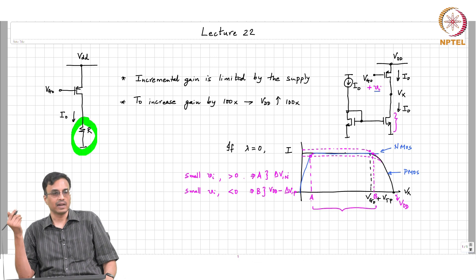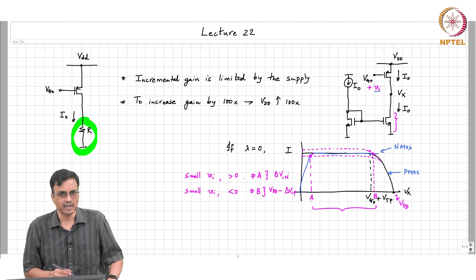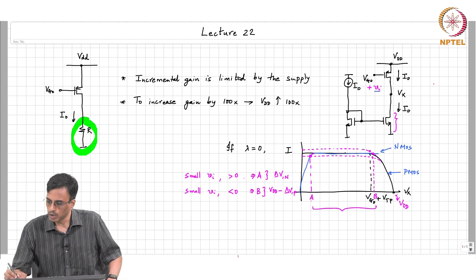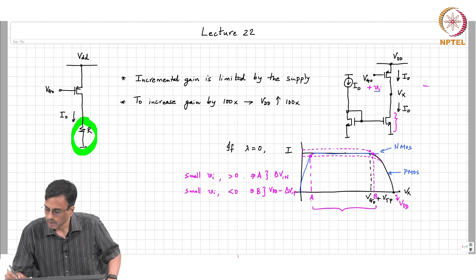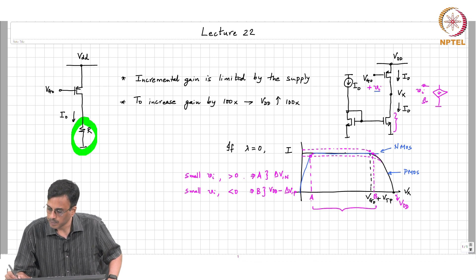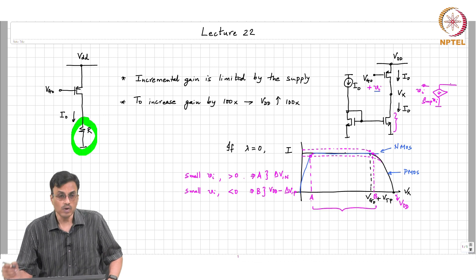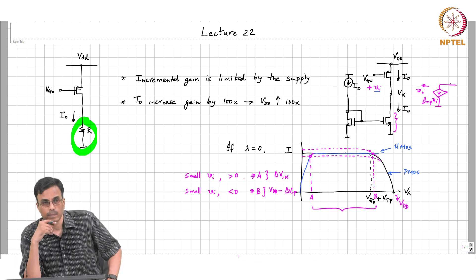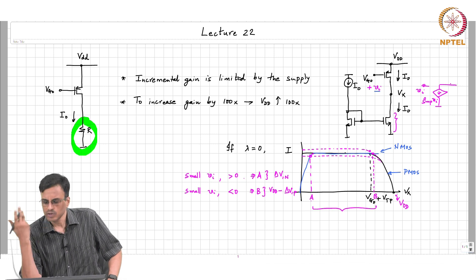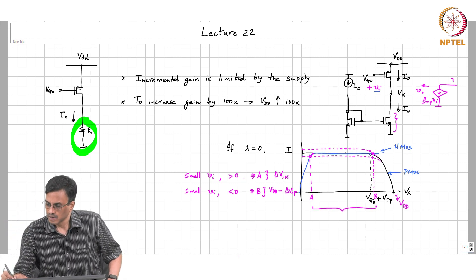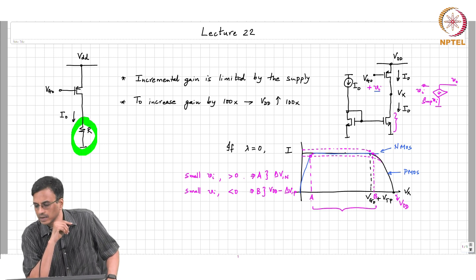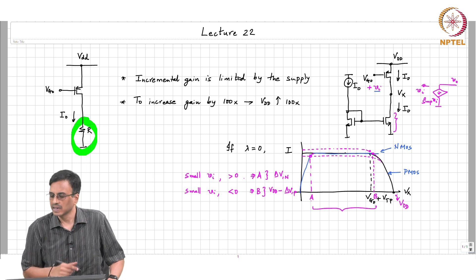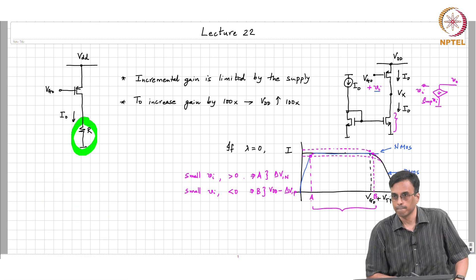This is also evident from the small signal equivalent circuit. The PMOS transistor incremental equivalent has the current source gmp times VI driving into an open circuit, giving output VO. The incremental gain is minus gm times R — so the incremental gain is negative infinity.